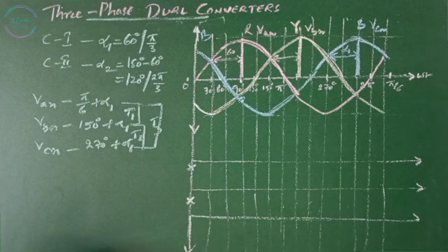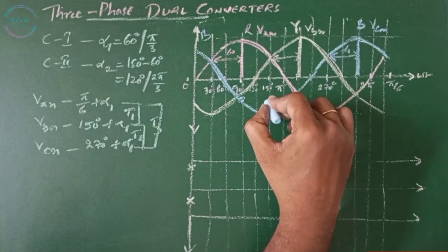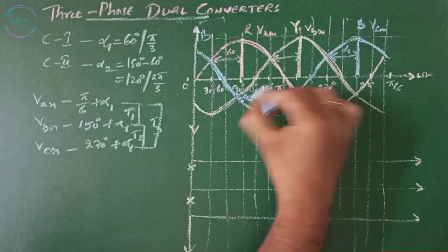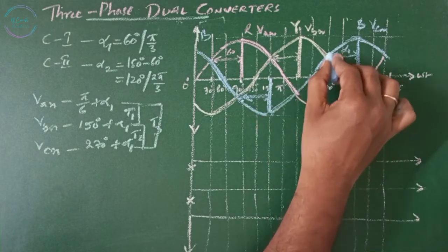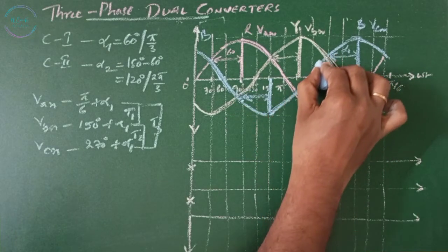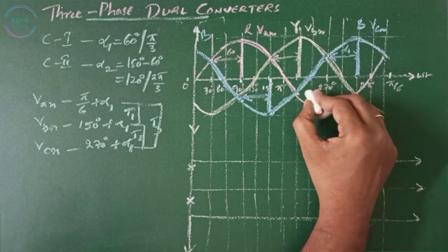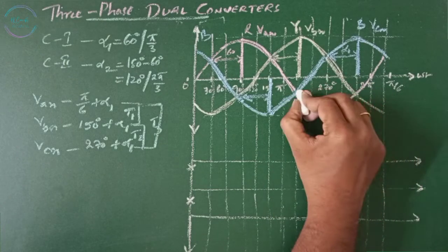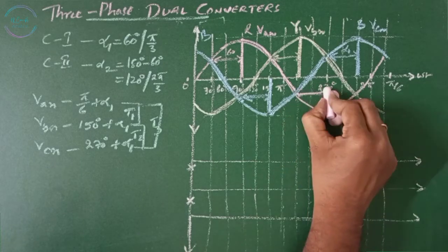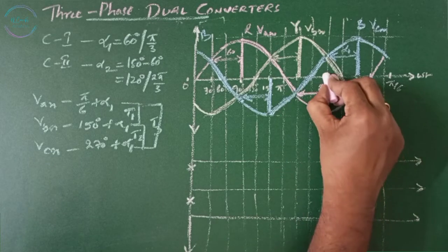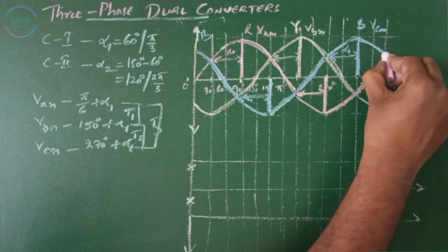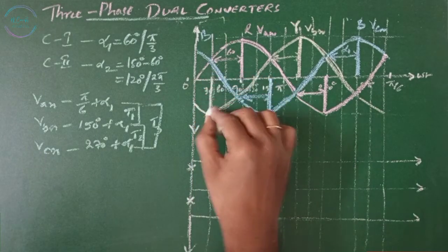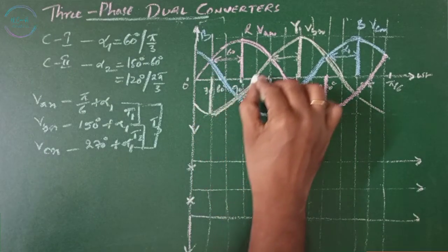In the bottom mix, when VAN is on and positive, it starts at an alpha of 60 degrees, conducting until the next thyristor starts. This is positive and needs to conduct after 60 degrees, so it starts conducting from here, and before that it is also present and conducts until here.